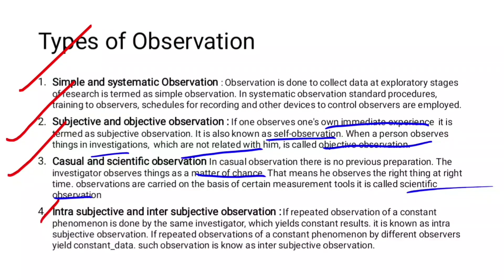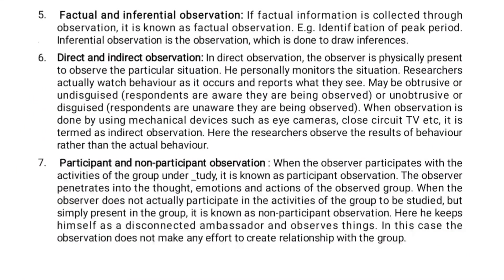Next, intrasubjective and intersubjective observation. In intrasubjective observation, repeated observation of a constant phenomenon is done by the same investigator and yields consistent results. In intersubjective observation, the constant phenomenon is observed by different observers — that is intersubjective observation.